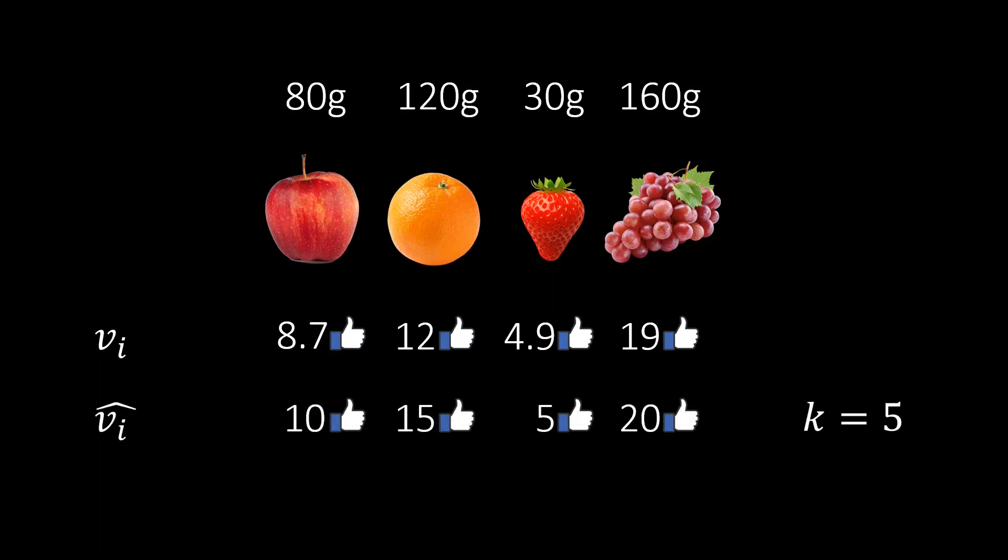We will slightly round up the values of the items. For example, we can round all values up to the next multiple of 5, as seen here. In general, we can do this for any k we choose. Rounding the values will lead to a smaller table. But of course, rounding also means that the solution we find might not be quite optimal.